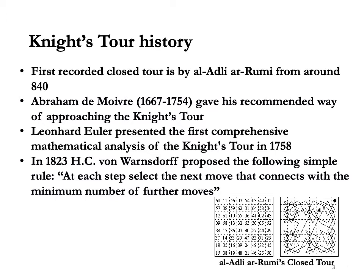Abraham de Moivre was a French mathematician, best known for his famous formula that gives trigonometric representation to complex numbers. This is his recommended way of approaching the knight's tour. First, divide the chessboard into an inner 4x4 square and the remaining border area. Start in the outer border. The knight must move around in one direction to fill the outer border as much as possible. When the outer border is filled up, you can traverse through the inner square with a little ingenuity.